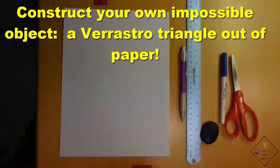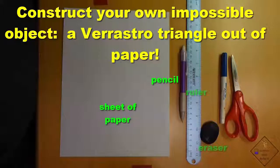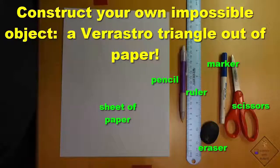Don't have any Legos? No problem. Grab a sheet of paper, pencil, ruler, eraser, marker, and scissors and Dr. Smith will show you how to make a Verastro impossible triangle.